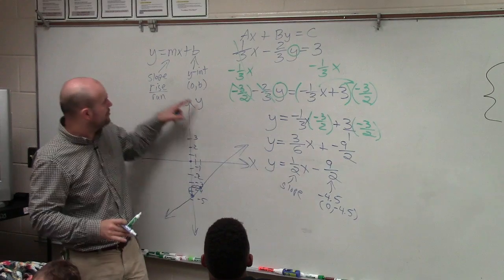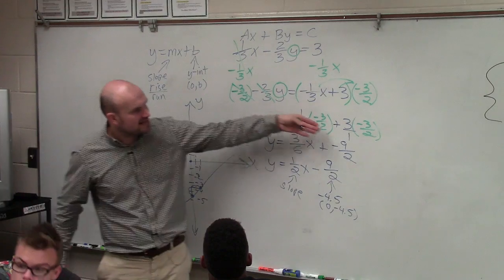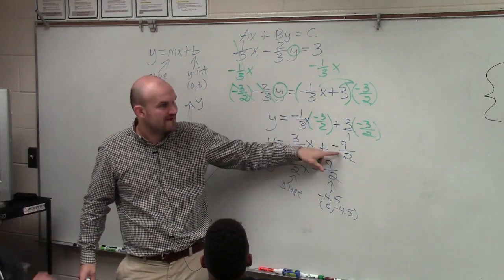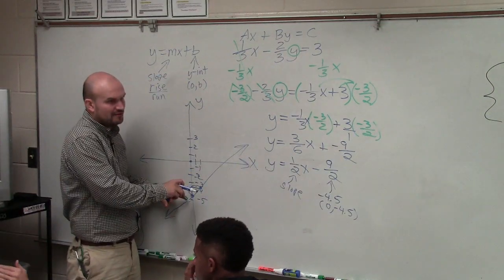Because when we're dealing with slope as a fraction, we know the rise over run. How far up or down to go? How far left or right to go? But as a y-intercept, that's a value. So we want to know exactly what that value is. That's why I converted it to a decimal, so I know I had to go down to negative 4.5.